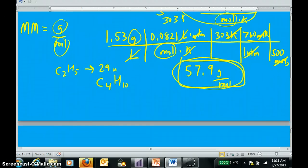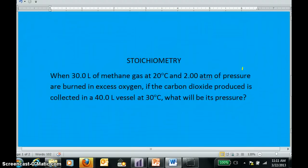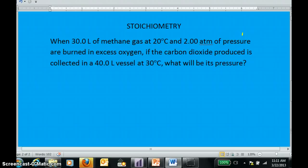Now, perhaps the most commonly used use of the ideal gas law constant is in stoichiometry. And here we have a problem. When 30 liters of methane at 20 degrees C and 2 atmospheres of pressure are burned in excess oxygen, if the carbon dioxide produced is collected, what will be its pressure? So I need a balanced equation to begin with.